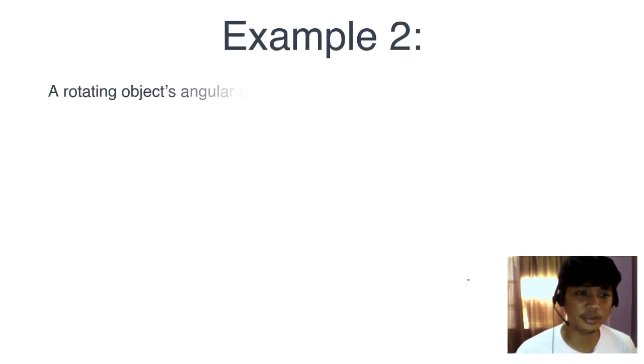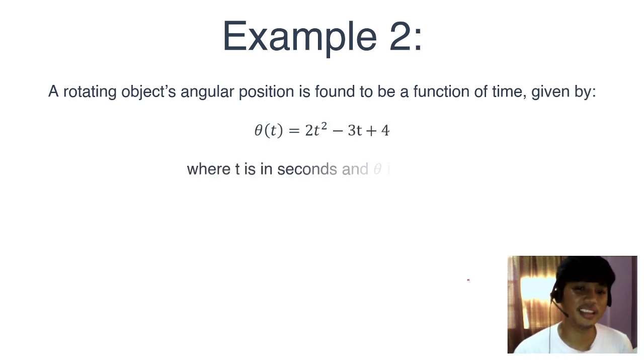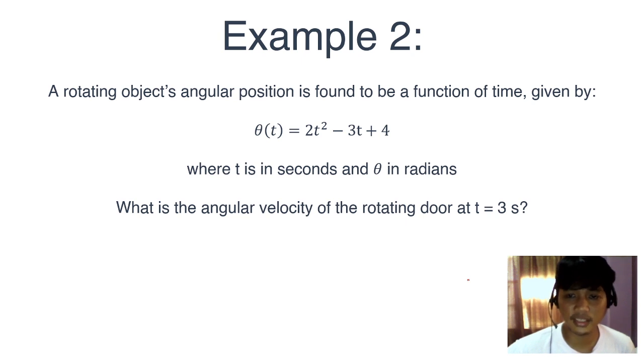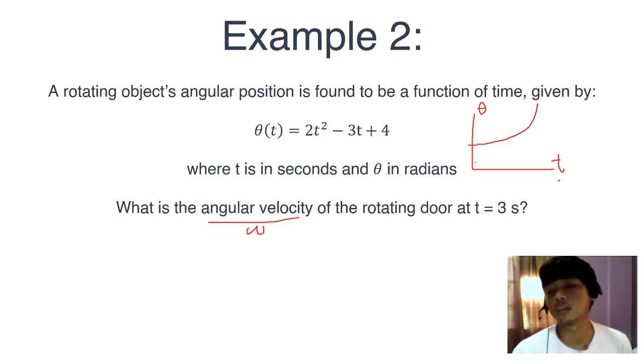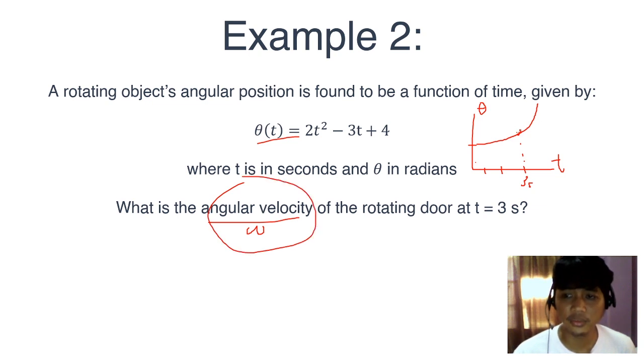Enough chatter, let's solve a problem. A rotating object's angular position is found to be a function of time given by theta t equals 2t squared minus 3t plus 4, where t is in seconds and theta in radians. What is the angular velocity of the rotating door? We're getting omega, instantaneous angular velocity at t equals 3 seconds. Fortunately, some scientist already provided this formula, probably a parabola. What this graph tells us is the angular position for each time, so for 3 seconds, the graph will tell us where the object is, where in radians the object is, but it doesn't tell us the velocity. It just tells us where the object is, this formula. How do we solve the velocity?